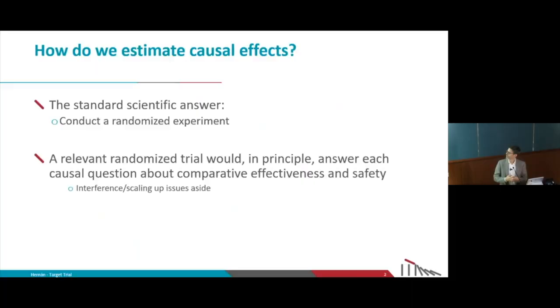How do we estimate causal effects? The standard answer in science is that if we want to estimate the causal effect, we run a randomized experiment. If it is with humans, we call it a randomized trial. That's the standard way of finding out what works.